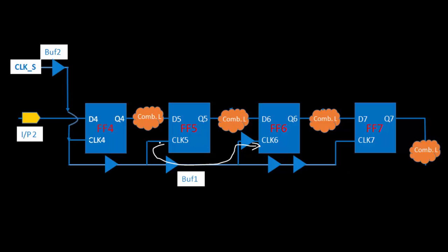Here we have clock 6 and clock 5. To decrease the skew in this path, there are three ways. Either you remove this buffer on the clock 6 path — that is option one. Let's suppose initially there was a 1 nanosecond buffer delay giving a 2 nanosecond skew. If you remove that buffer, the delay becomes 1 nanosecond — the skew decreases, and the hold violation is fixed.